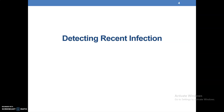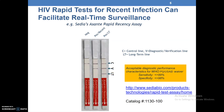How do we detect recent infection? HIV rapid tests for recent infection can facilitate real-time surveillance. For example, the CEPHEID Sunday rapid recent assay. We can see the options of results that are on the screen.